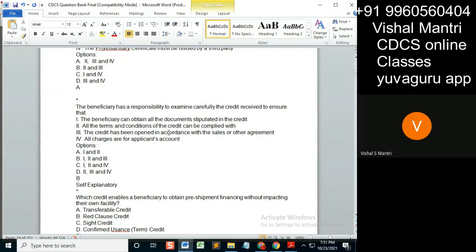The credit has been opened in accordance with the sales or other agreement. The beneficiary has to check this - whether it is as per the sales agreement or whatever the agreement is. Next, all charges are for the applicant's account.